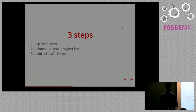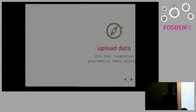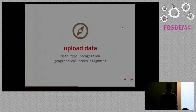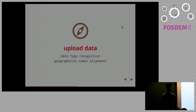To sum up, we have basically three steps in this tool. First is to upload data; then to choose a map projection; and finally to add visual forms. In the data upload step, the features we've developed include data type recognition: you input a CSV and the tool tries to understand whether columns are numeric, latitude, longitude, geographic names, or qualitative string values. The tool also proposes geographical name alignment — trying to recognize from a column of geographic names which ones match our base map.